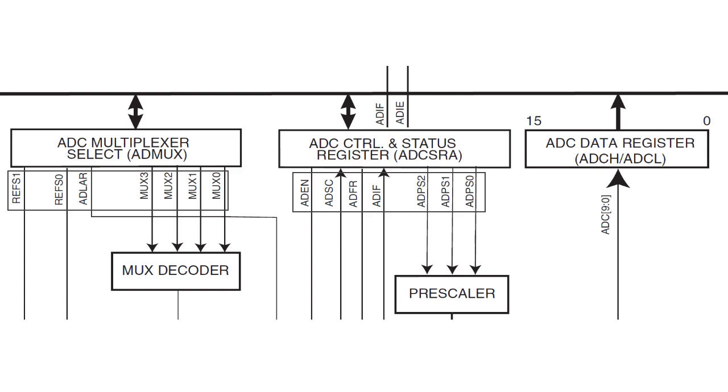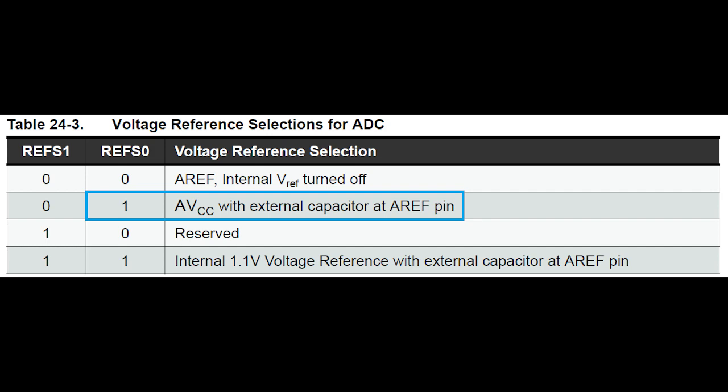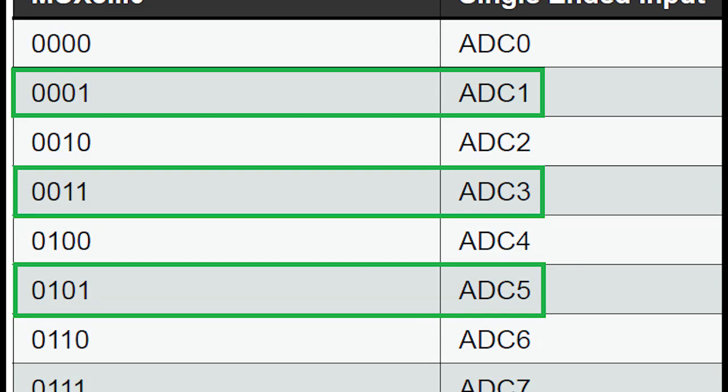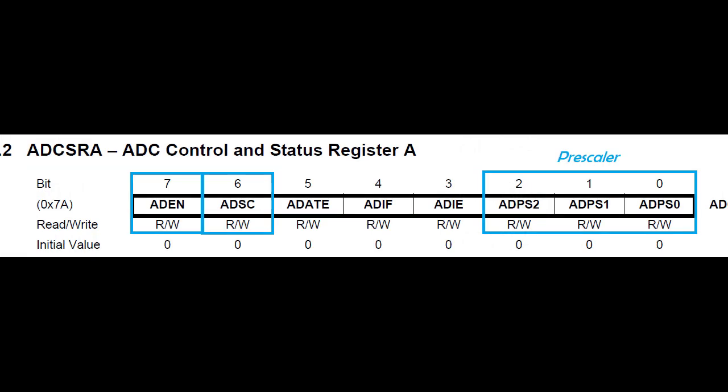First of all, we'll be using REFS0 because we'll be specifying a reference voltage here. We'll be using pins 1, 3, and 5. For the ADCSRA, we'll be setting up a prescaler of 8 by manipulating ADPS0 to ADPS2, and then we'll be using ADSC and ADEN to manipulate these so we can activate our ADC converter.